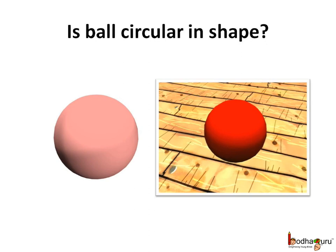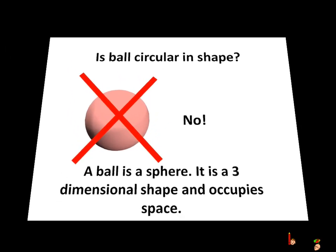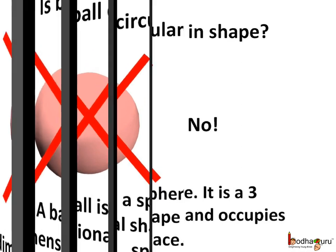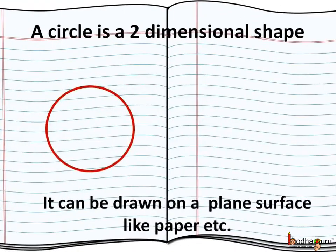So is a ball circular in shape? We do represent it as round or circular in shape when we draw it on paper, but a ball is not circular in shape. Instead, it is a sphere — a three-dimensional shape that occupies space. So a circle is a two-dimensional shape; it can be drawn on a plain surface like paper.